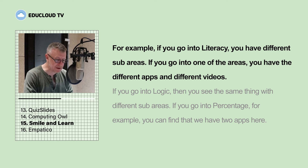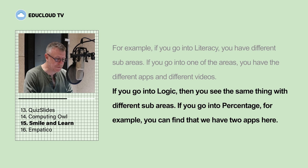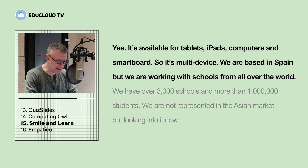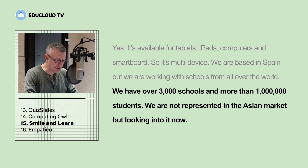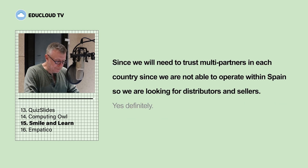For example, if you go into literacy you have different sub-areas. If you go into logic you see the same thing with different sub-areas. If you go into percentages, for example, you can find two apps there. It's available for tablets, iPads, computers and smart boards — multi-device. We are based in Spain but work with over 3,000 schools and more than one million students worldwide. We are not yet in the Asian market but are looking for distributors and partners in each country.